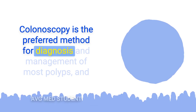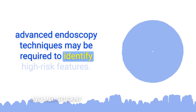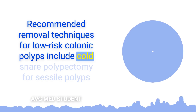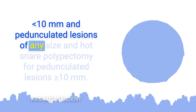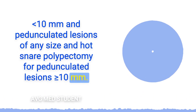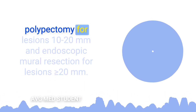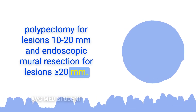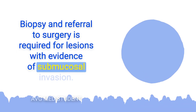Colonoscopy is the preferred method for diagnosis and management of most polyps, and advanced endoscopy techniques may be required to identify high-risk features. Recommended removal techniques for low-risk colonic polyps include cold-snare polypectomy for sessile polyps less than 10 mm and pedunculated lesions of any size, and hot-snare polypectomy for pedunculated lesions greater than or equal to 10 mm. For high-risk polyps, hot or cold-snare polypectomy is used for lesions 10 to 20 mm, endoscopic mucosal resection for lesions greater than or equal to 20 mm, and biopsy with referral to surgery for lesions with evidence of submucosal invasion.